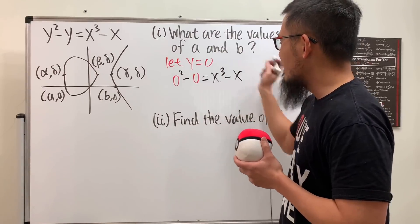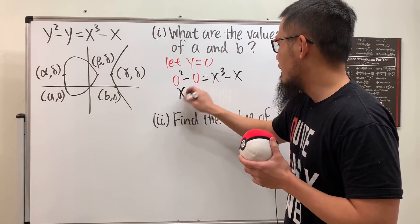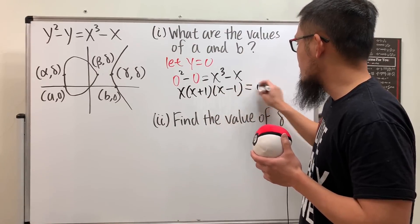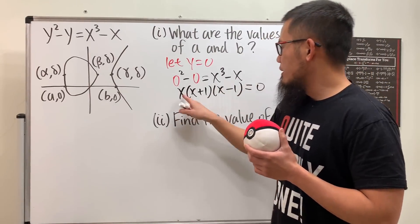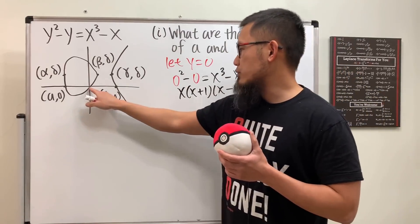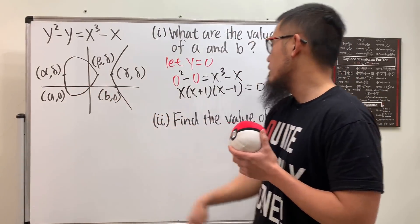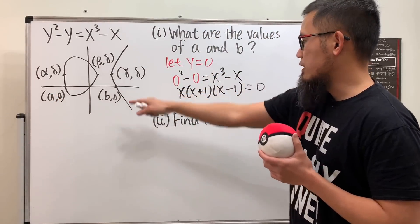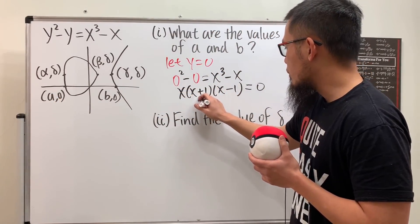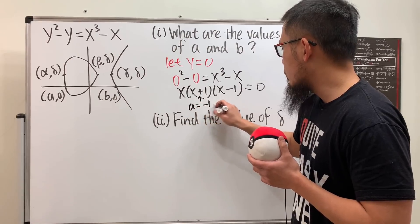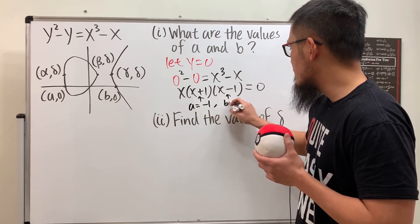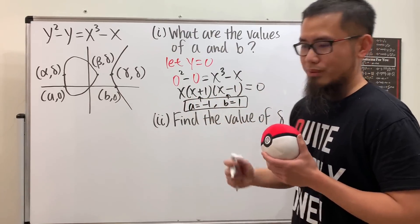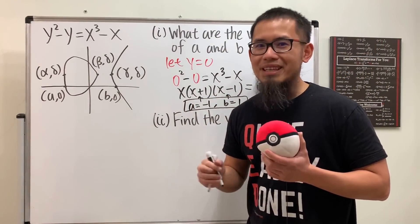We can solve this by factoring: x(x + 1)(x - 1) = 0, which gives us x = 0, x = -1, and x = 1. The solution x = 0 is the origin, not a or b. So from the graph, a = -1 and b = 1. Straightforward — we've found two points.